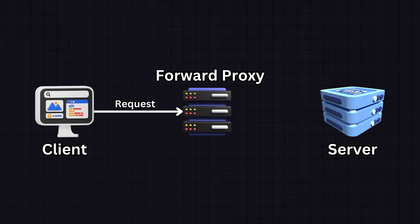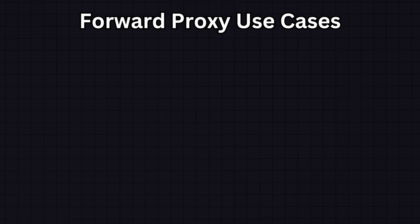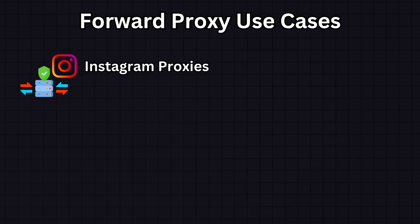One of the primary functions of a forward proxy is to hide the client's IP address. When it forwards the request to the target server, it appears as if the request is coming from the proxy server itself. One popular use case is Instagram proxies — a specific type of forward proxy used to manage multiple Instagram accounts without triggering bans or restrictions. Marketers and social media managers use them to appear as if located in different areas or as different users, allowing them to manage multiple accounts, automate tasks, or gather data without being flagged.